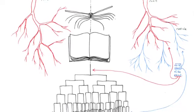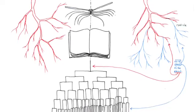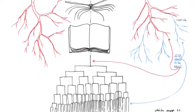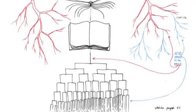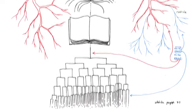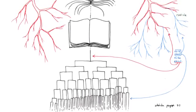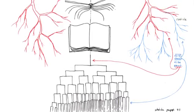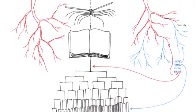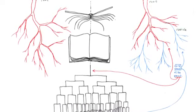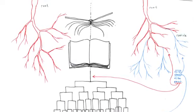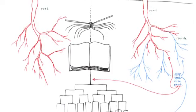In truth, it is not enough to say, long live the multiple. Difficult as it is to raise that cry, no typographical, lexical, or even syntactical cleverness is enough to make it heard. The multiple must be made, not by always adding a higher dimension, but rather, in the simplest of ways, by dint of sobriety, with the number of dimensions one already has available: n minus one. The only way the one belongs to the multiple, always subtracted.